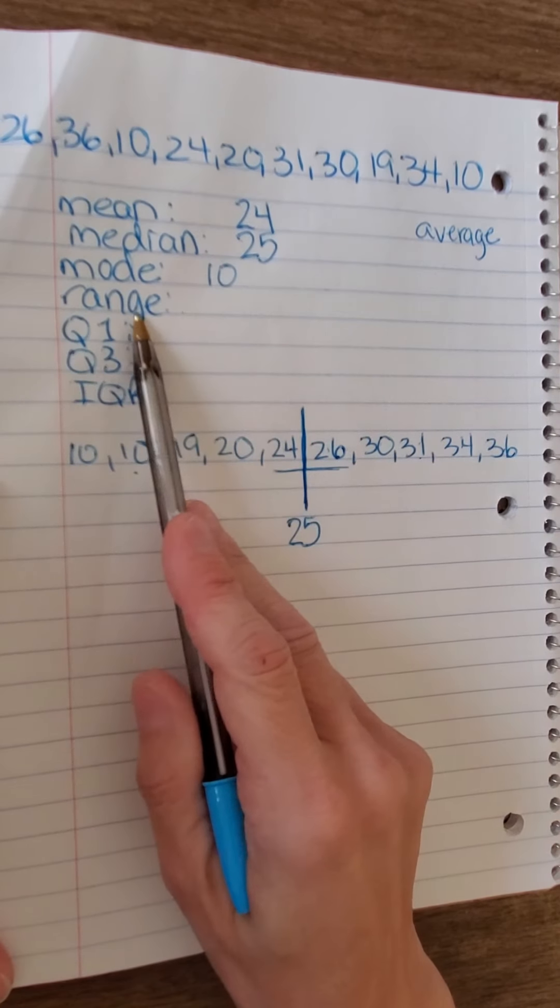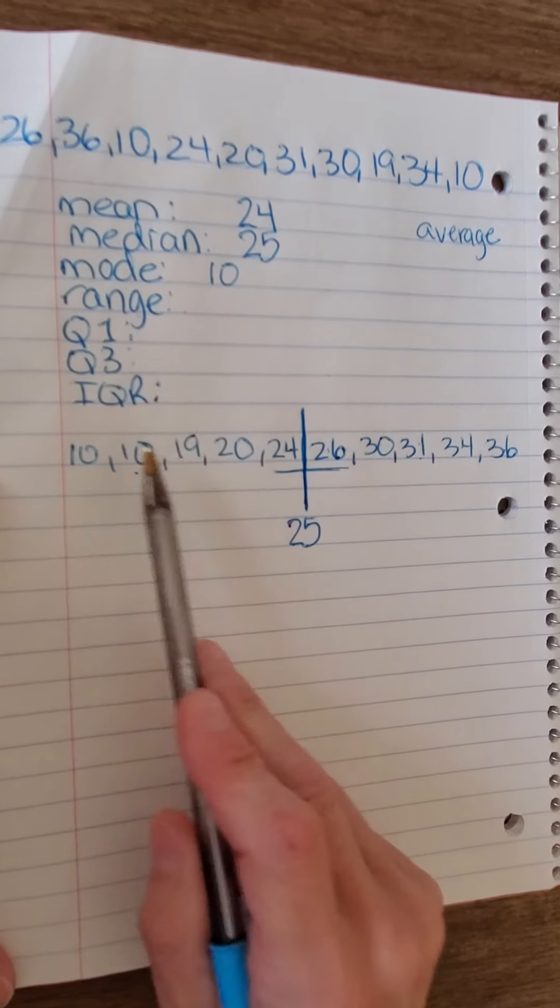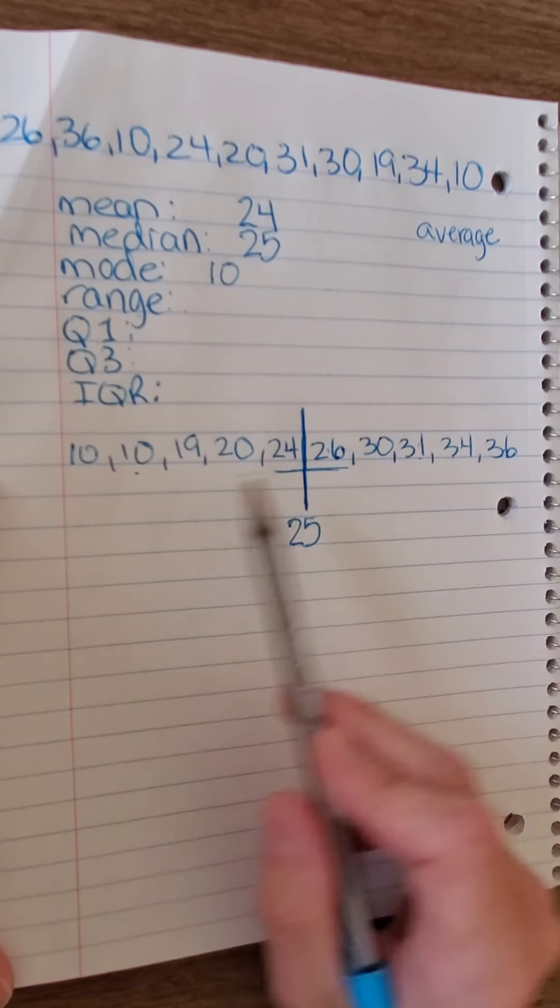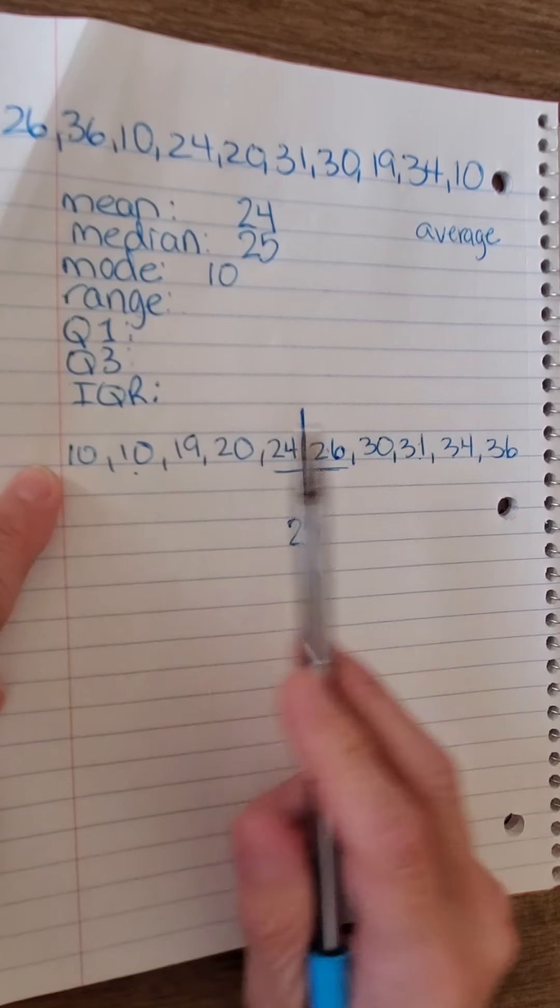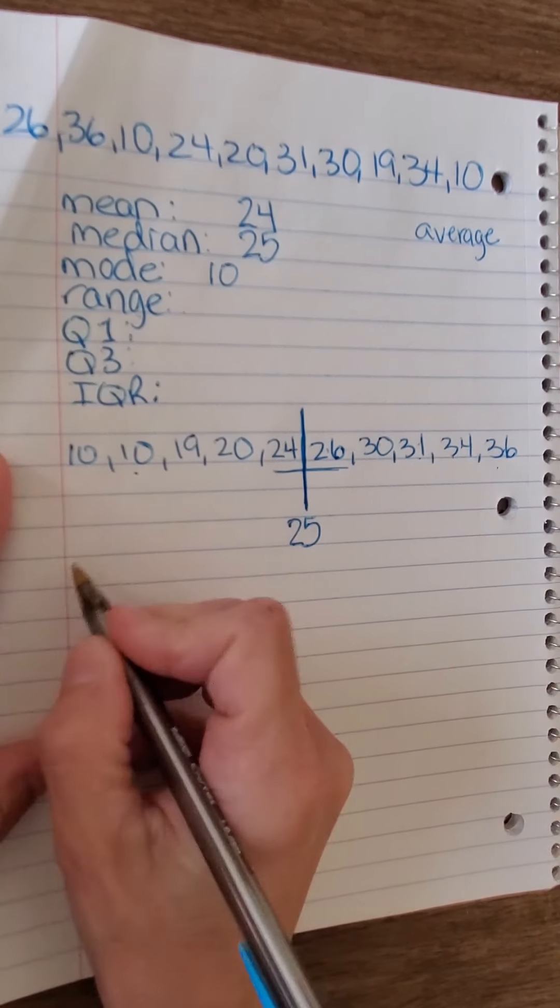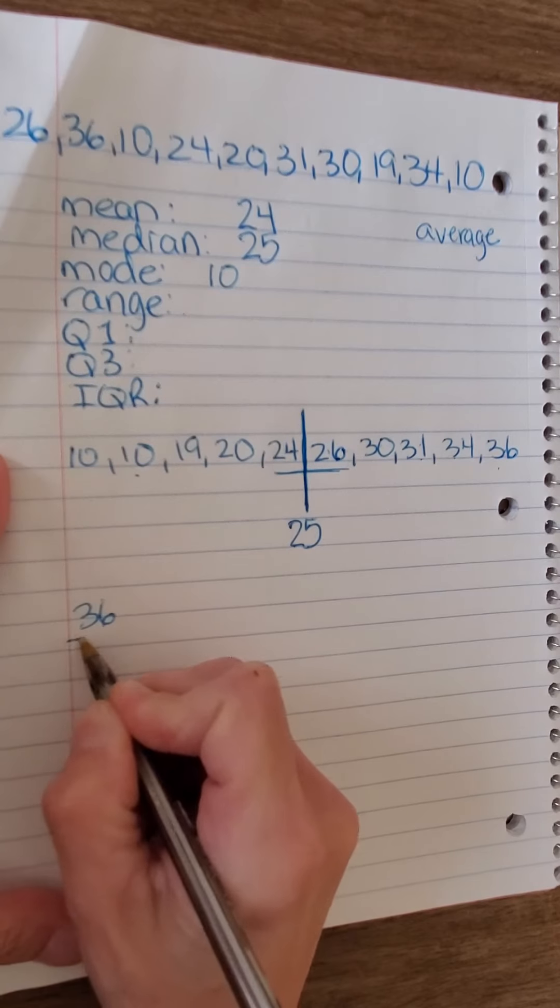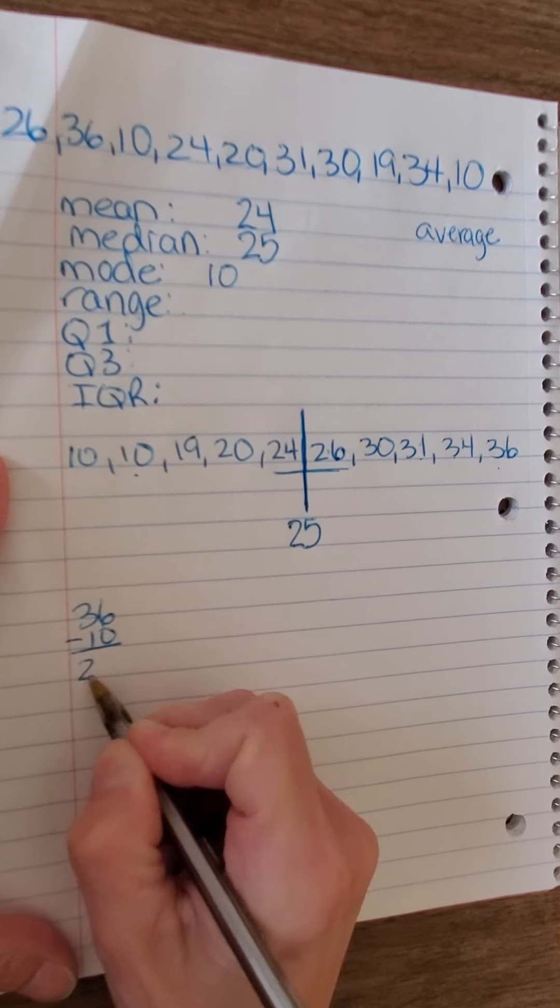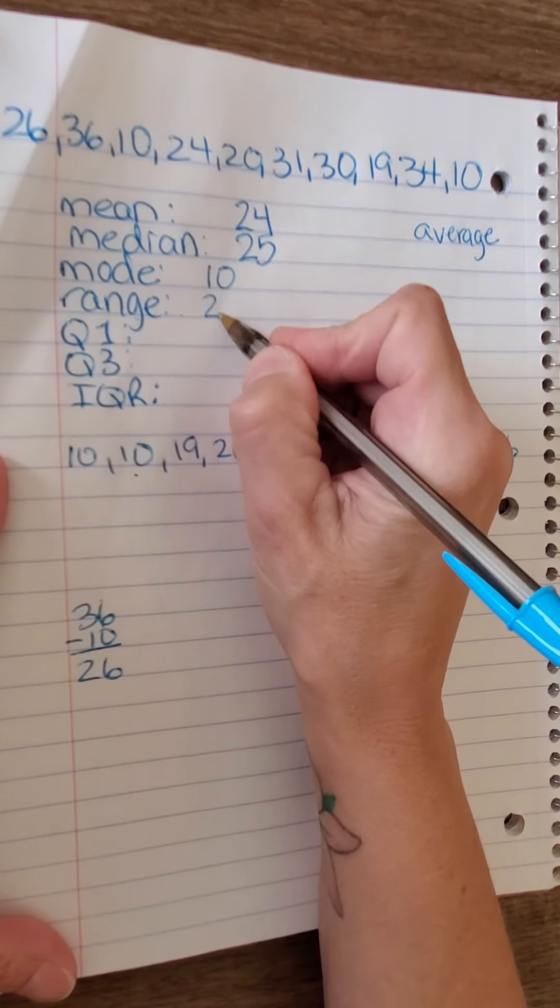To find the range, we want to know the range of data by subtracting the lowest number from the highest. So, if we do 36 minus 10, we find out our range is 26.